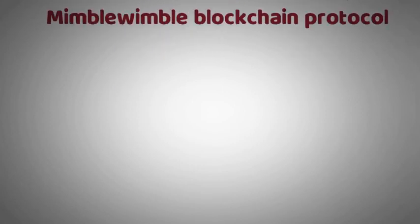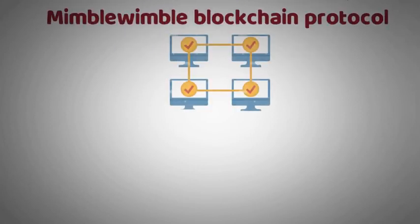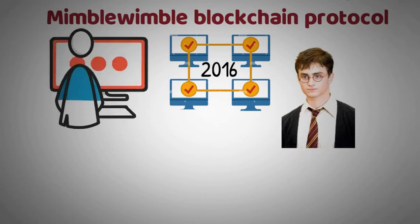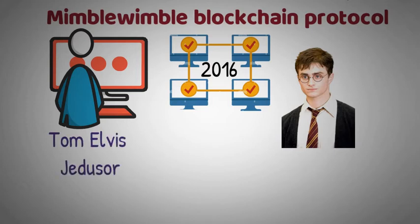MimbleWimble Blockchain Protocol. The blockchain protocol was first introduced in 2016 by what appears to be a big fan of Harry Potter. We know that the creator loves the Harry Potter franchise because they have taken the pseudonym of the French name of Lord Voldemort, which is Tom Elvis Jeducer.